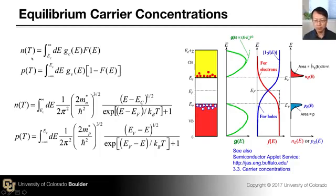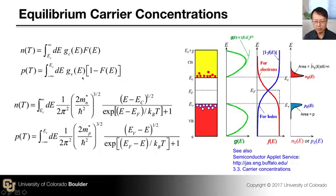The total electron concentration in the conduction band is given by the integration over the entire conduction band of the product G_C times F — the density of states of the conduction band times the Fermi-Dirac distribution function. The hole concentration in the valence band is similarly given by the integration across the entire valence band of the density of states of the valence band times (1 minus F), the probability of not finding an electron at energy E. We already know the density of states from the previous video, so we now plug in the Fermi-Dirac probability function for F.